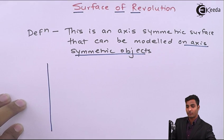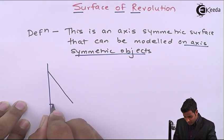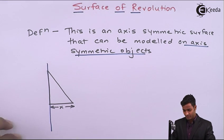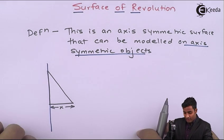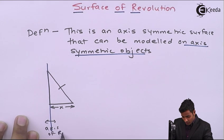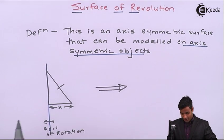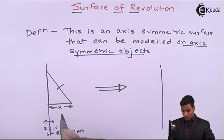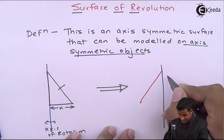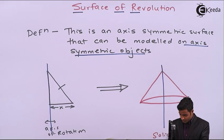This is the axis of rotation, and I will draw a right-angled triangle on this axis of rotation at distance x. When I revolve this triangle about this axis of rotation, it will generate a solid cone. After revolving this triangle by 360-degree rotation, it develops a solid cone.